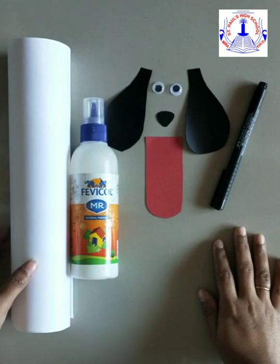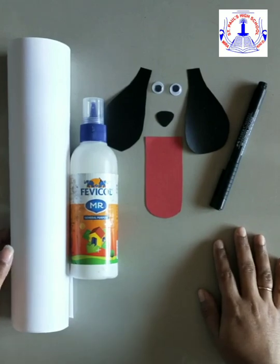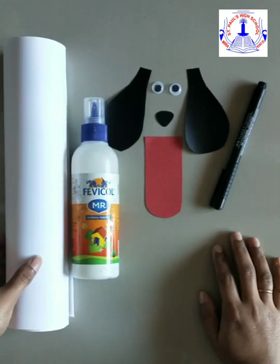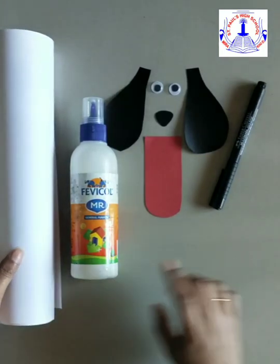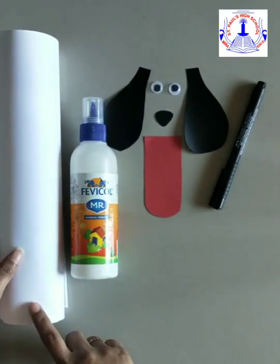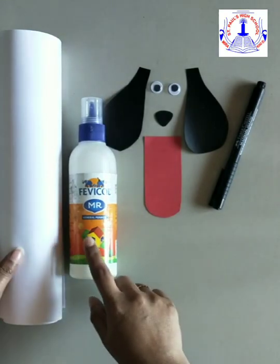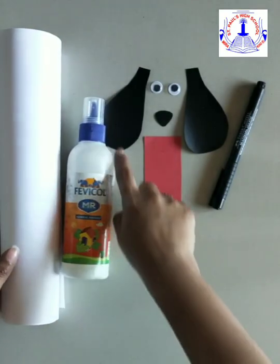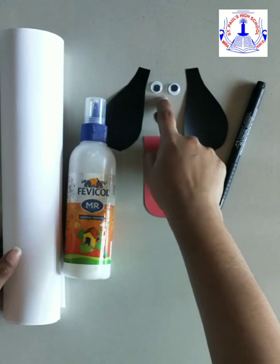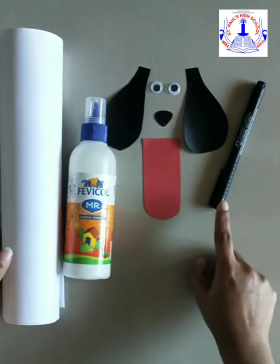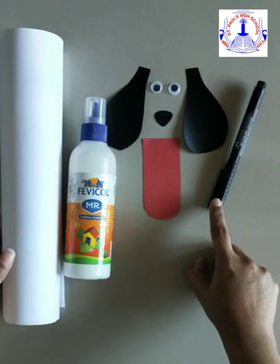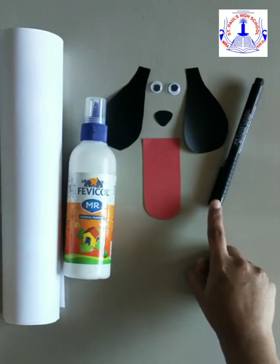Okay children, are you all excited for today's activity? Today we are going to make a hand puppet. So the materials are white color A4 size paper, glue, these are the cutouts, googly eyes and the cutout ears, nose, tongue and black marker I am using. You can use black sketch pen also.